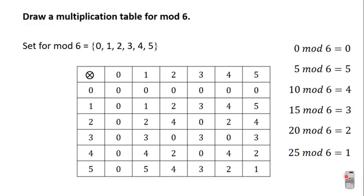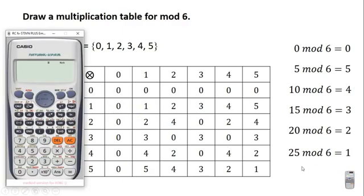You want to find 25 mod 6. You switch on your calculator and subtract 6 from 25: 25 minus 6 gives us 19. 19 is bigger than the modulus 6, so you subtract 6 from 19 again: 19 minus 6 gives us 13. 13 is still bigger than 6, so you subtract 6 again: 13 minus 6 gives us 7. 7 is still bigger than 6, so you subtract 6 again and you get 1. Now, 1 is less than the modulus 6, so 25 mod 6 is 1.